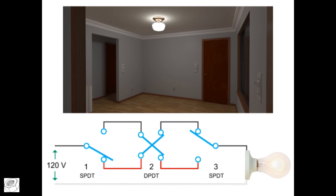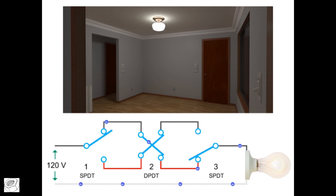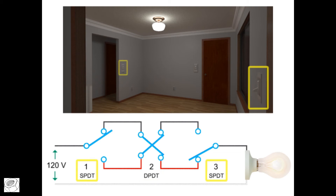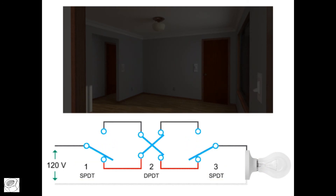If we change the position of both switch one and three while switch two remains in the crossover position, the current will still flow, this time from the black wire to the red wire to complete the circuit and light the bulb. Finally, keeping switch two in the crossover position while placing both switch one and three simultaneously in either the up or down positions will break the circuit.